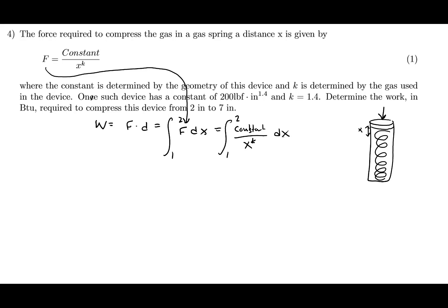We integrate from 1 to 2 of the constant over x^k dx. We can do this on a calculator or use the power rule: the integral of x^n dx equals 1/(n+1) · x^(n+1). Since x^k is in the denominator, this is really x^(−k). Integrating gives 1/(1 − k) · x^(1 − k), evaluated from 1 to 2.